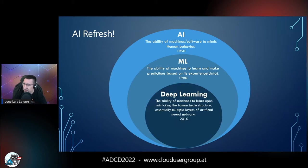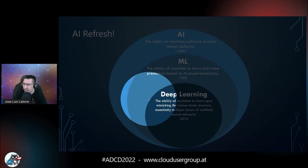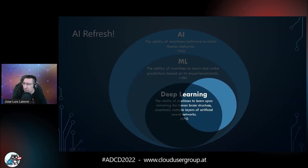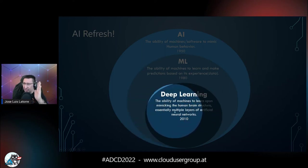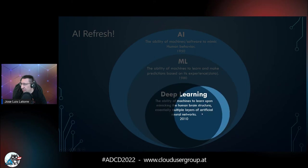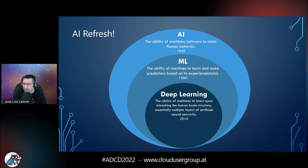And then some years later we get to see something called deep learning. Sounds awesome, but essentially it's very simple — it's the ability of machines to learn by mimicking the human brain structure. They learn how to set up different layers of artificial neural networks, essentially mimicking the biological neuron. With the increasing computing power we have today, and with GPUs, this has reached an amazing level.